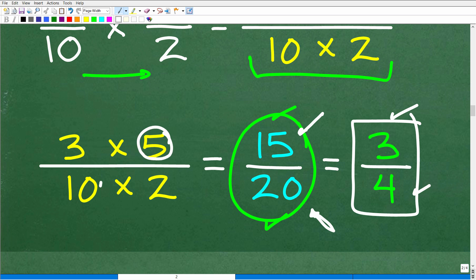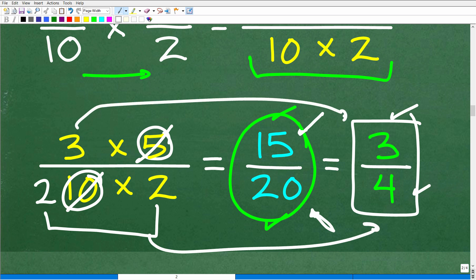Notice this 5 goes into this 10 how many times? Well, it goes into it 2 times. So we could cross-cancel this 5 and this 10 and we could put a 2 there. So when we do this multiplication, what's going to be left? 2 times 2, which of course is 4. And then here we have a 3 in the numerator. But let's go ahead and look at this differently here, just so you understand. Kind of taking an extra step.